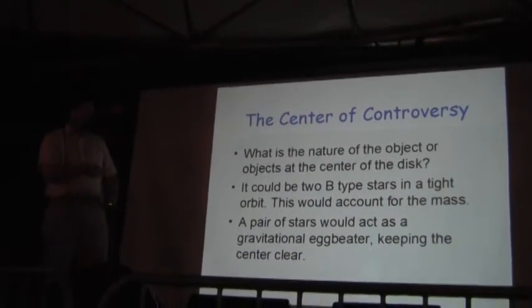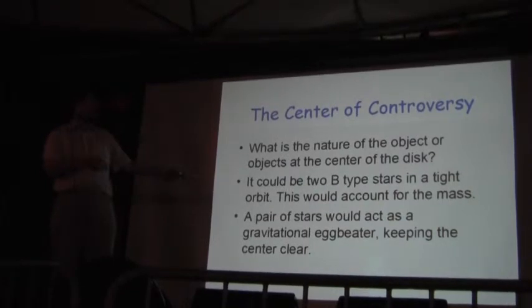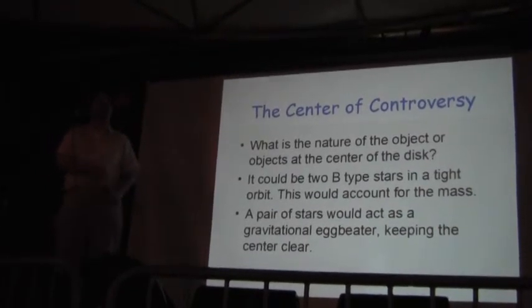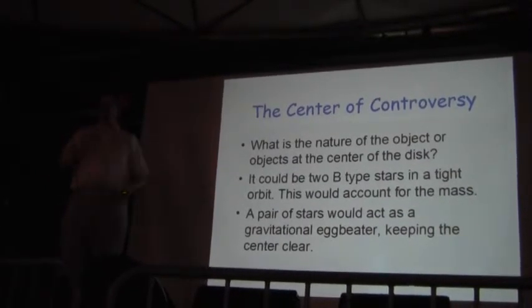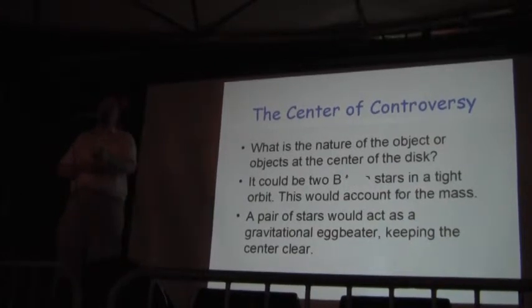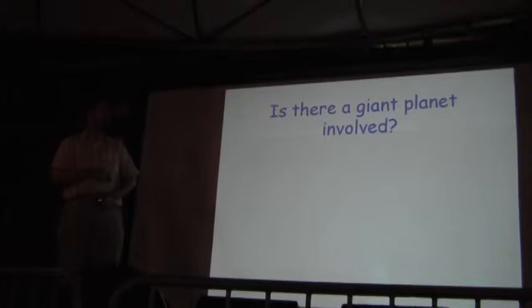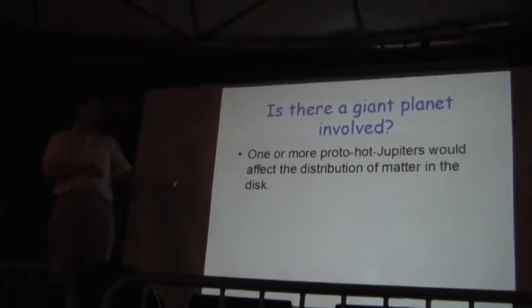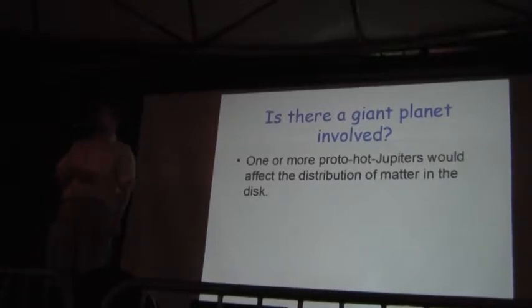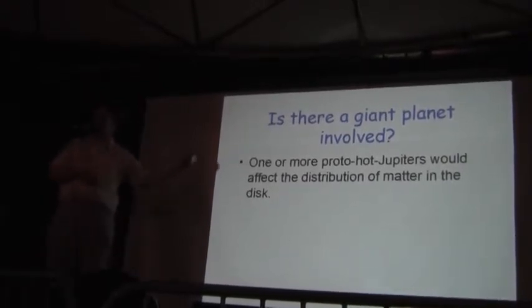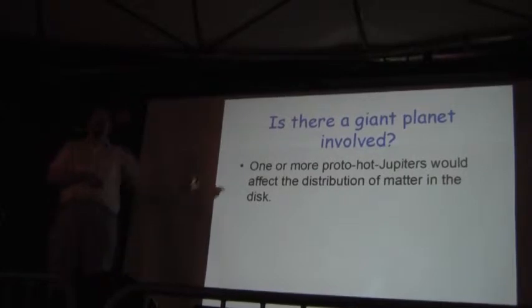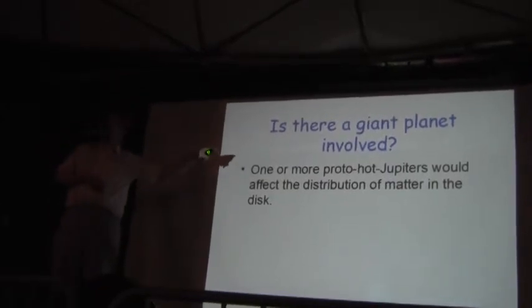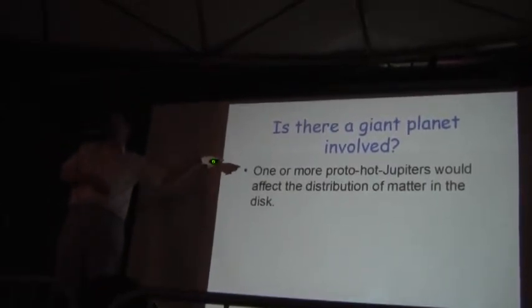And the two-star theory would mean it would be like an eggbeater and it would just chuck out the stuff from the middle. So there would be stuff flying around. And you'd be able to see it. Is there a giant planet on the interior of the disk? One or more hot Jupiters. Could there be an entire system of planets there? Anyone familiar with the term hot Jupiters? Or anyone not familiar with the term hot Jupiters in the audience?